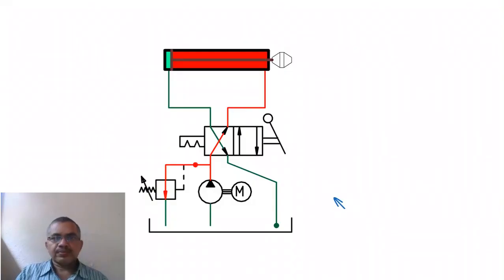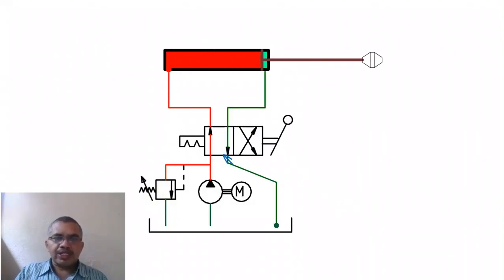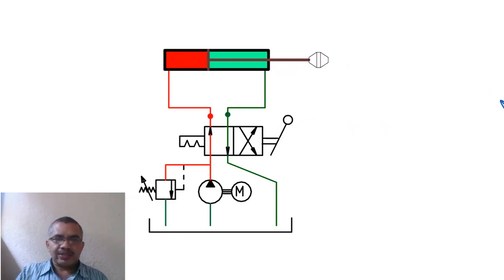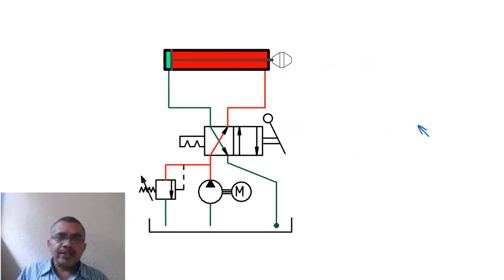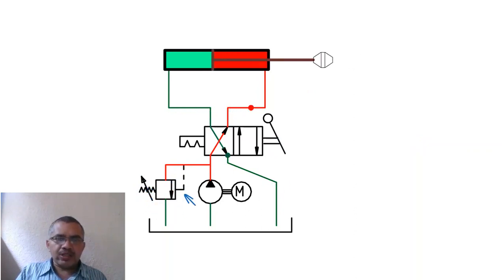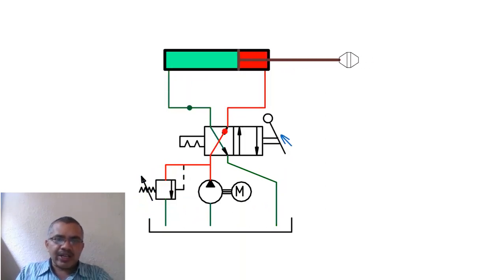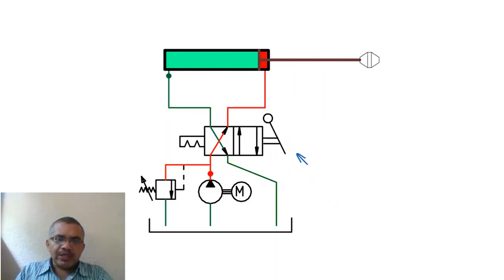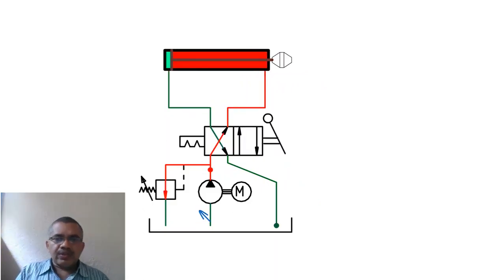In the animation, when the lever is in the first position, P to A and B to T connection is made and the cylinder extends. When the lever is shifted, P to B and A to T connection is made and the cylinder retracts. At the end of extension or retraction, the pressure relief valve opens. During extension and retraction the pressure relief valve is closed. Once the cylinder completes its stroke and becomes stationary, oil pumped by the pump flows back to the reservoir through the pressure relief valve.